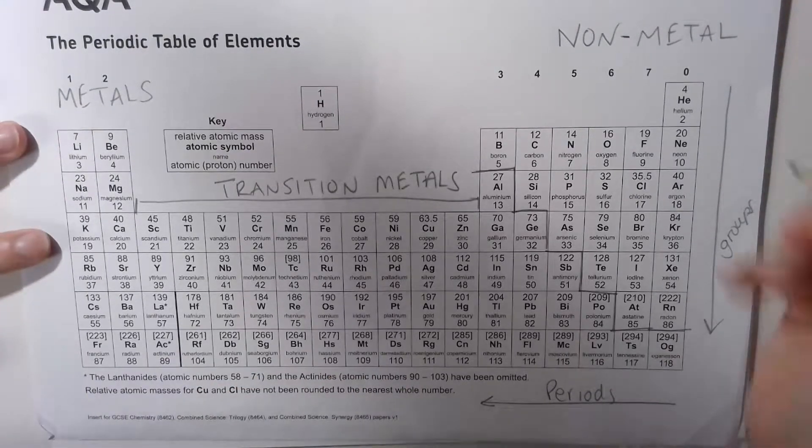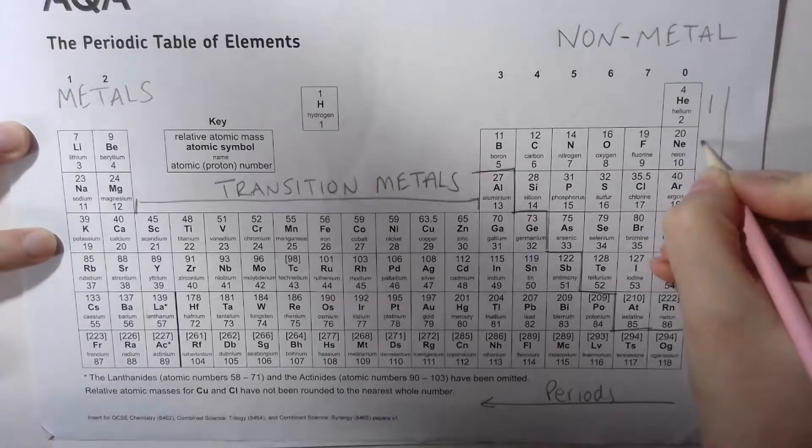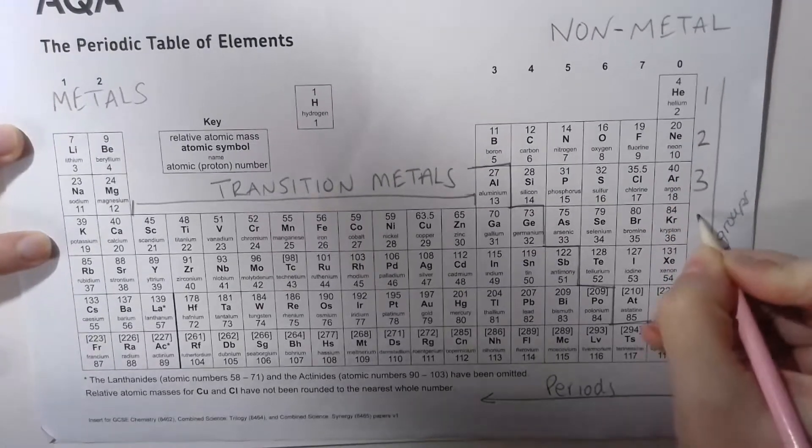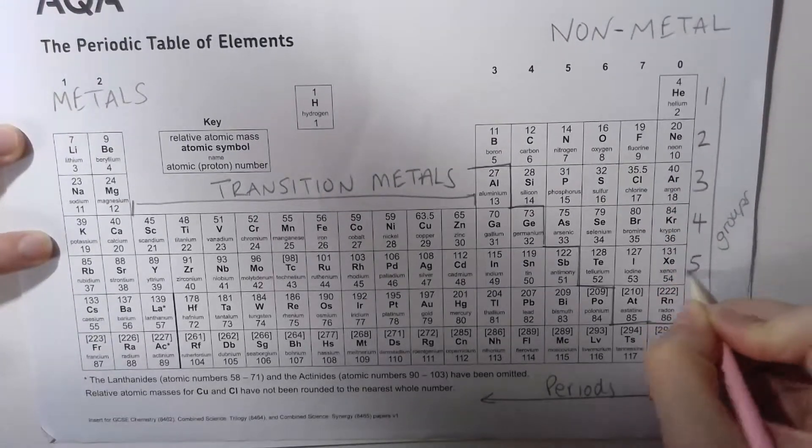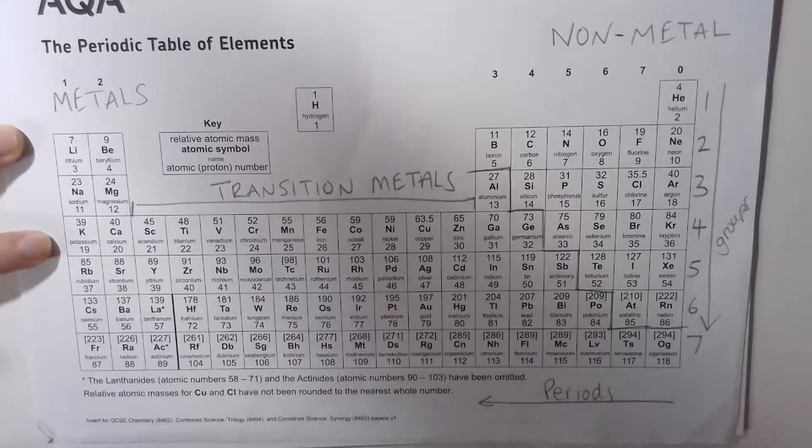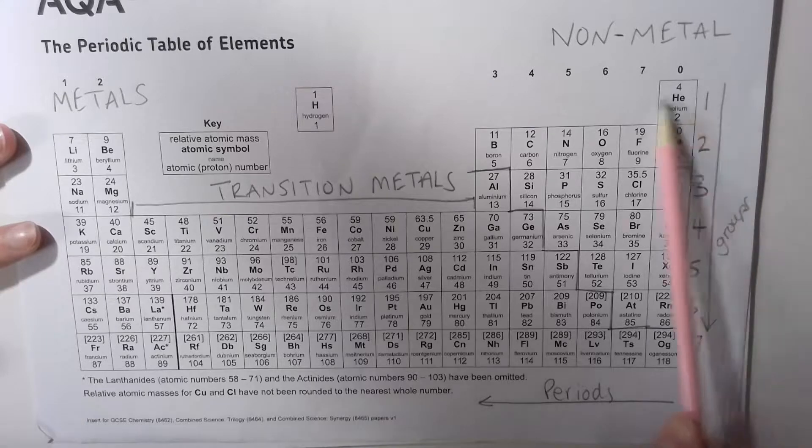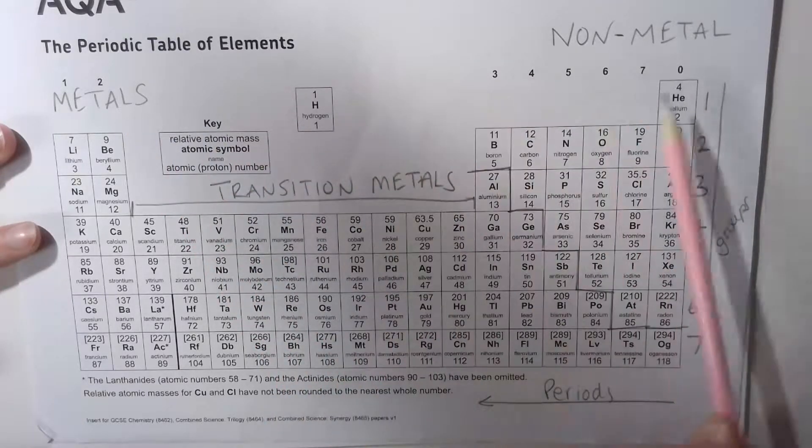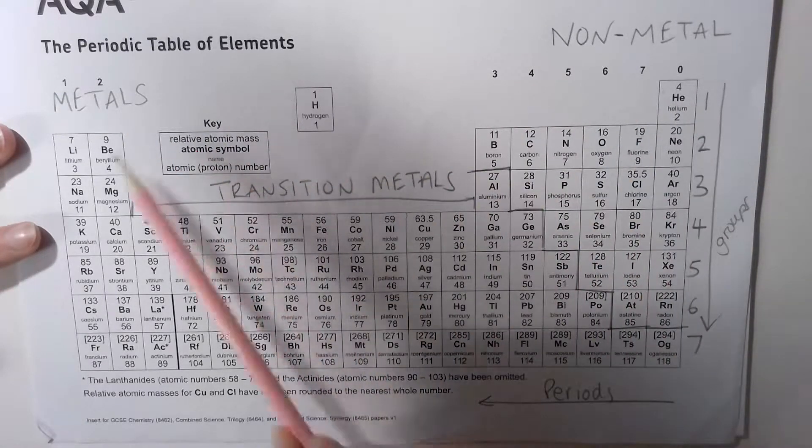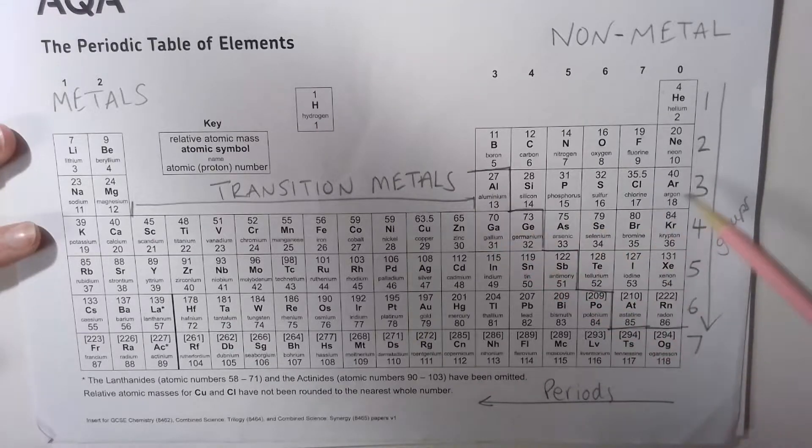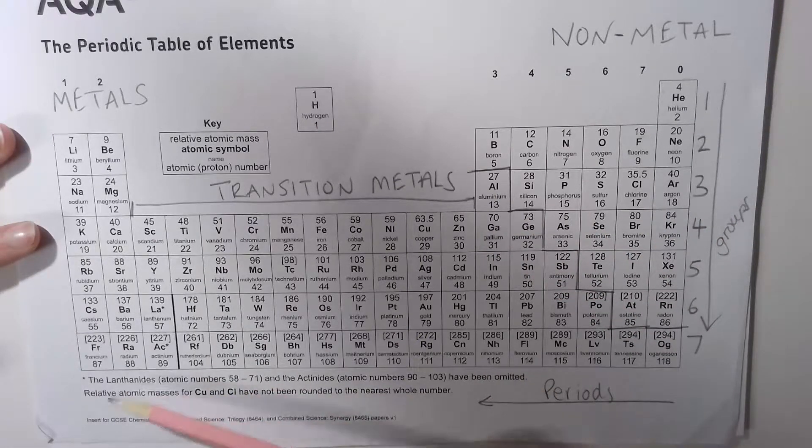We can add in a number for your periods, going from one all the way down to seven. This will tell us how many shells these atoms all have. Anything in the first period has one shell, anything in the second period has two, anything in the third has three, and so on. Anything in the bottom of the periodic table are the bigger, larger elements that can have up to seven shells.